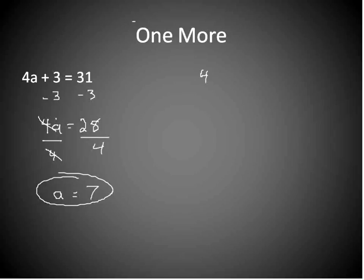We can check our work again by saying 4 times a which is 7 plus 3 equals 31. 4 times 7 is 28. 28 plus 3 is indeed 31. So 31 is equal to 31. And that's how we do multiple step transformations or two step transformations.